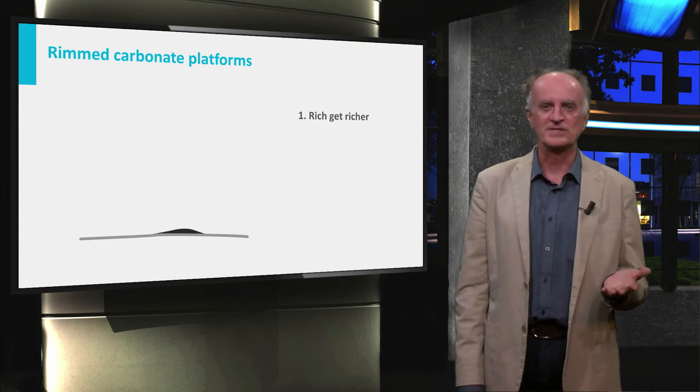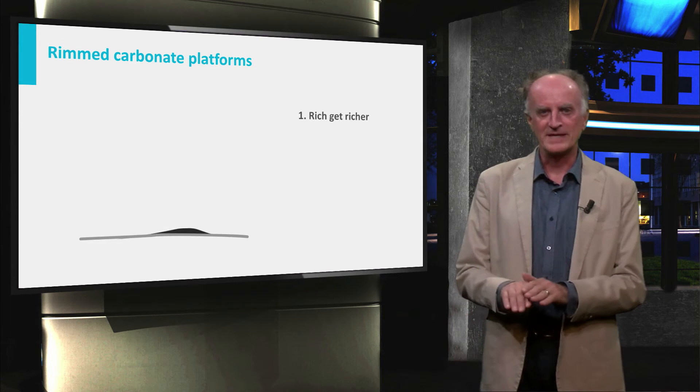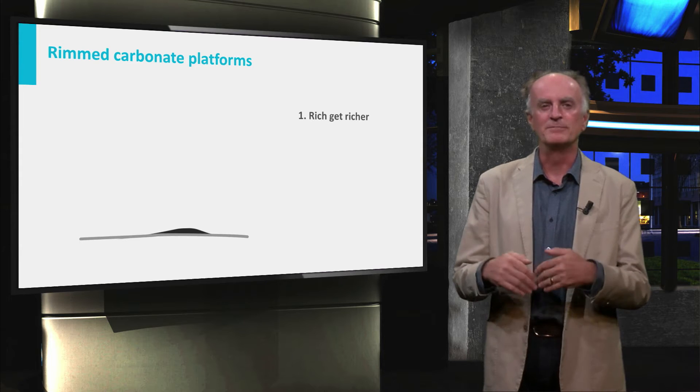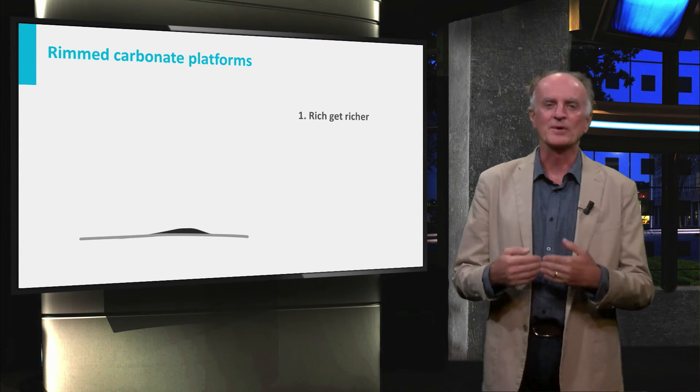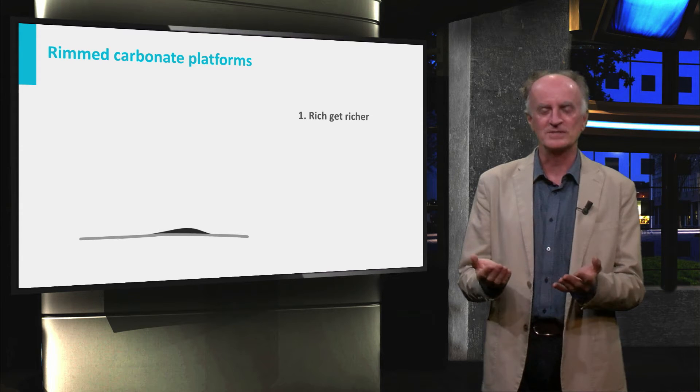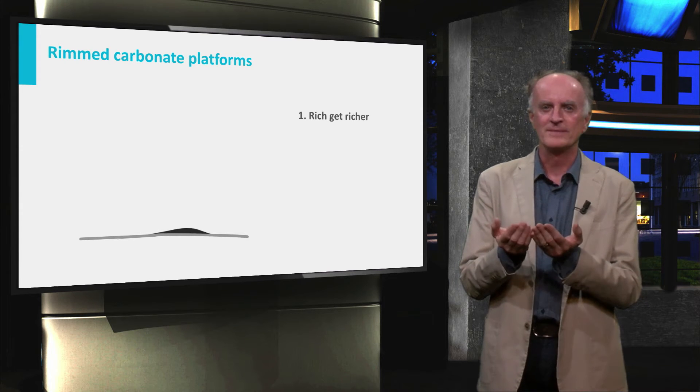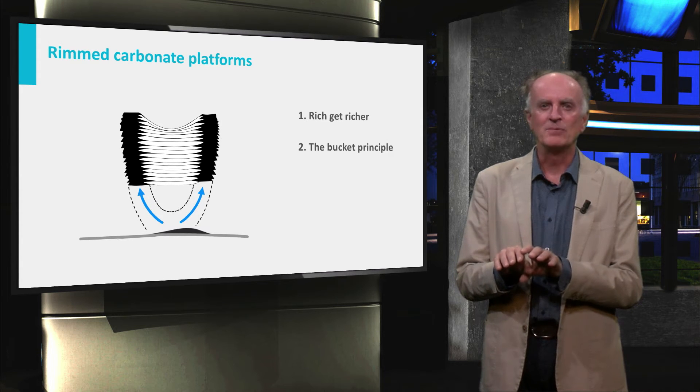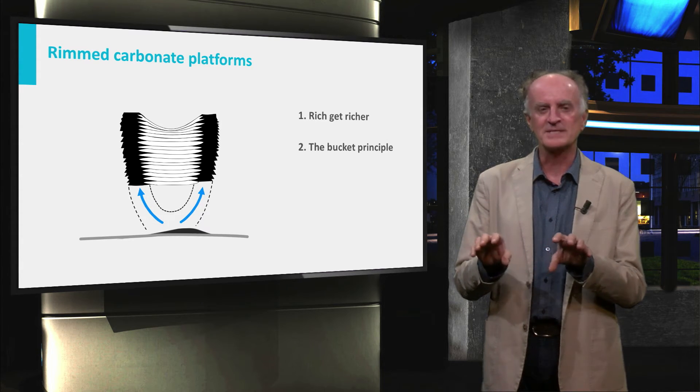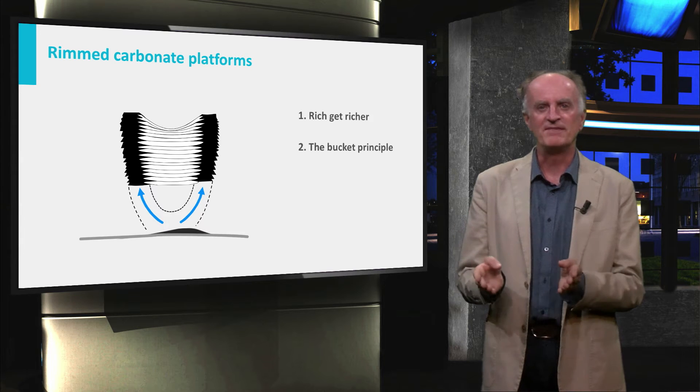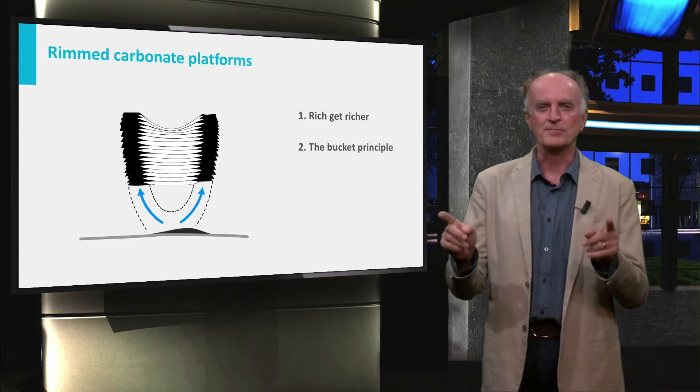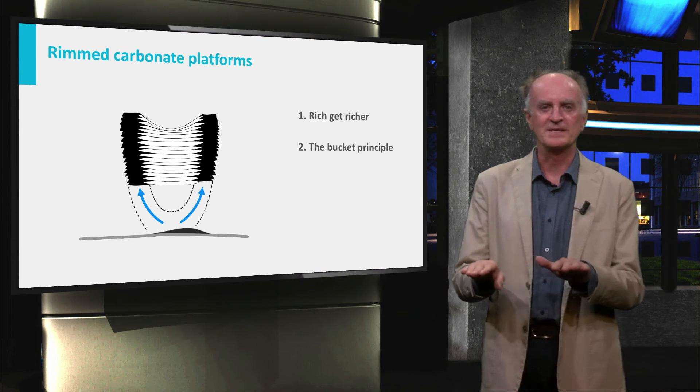The principles are as follows. The rich get richer. When a carbonate build-up manages to grow higher than the surroundings, it will receive more nutrients and more light, and will therefore have better living conditions and grow more. During growth, the initial carbonate build-up will become larger and two rims are typically generated, defining an intervening protected domain. These are the rims of the bucket, protecting the platform interior.